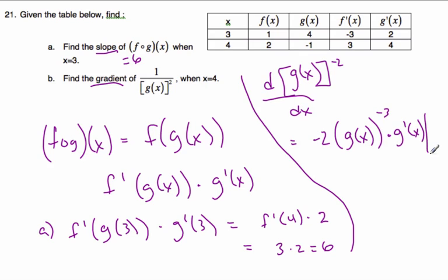And I'm going to do it when x is 4. So that gives me negative 2, g at 4 to the negative 3, g prime at 4, which gives me negative 2. g at 4 is negative 1 to the negative 3. g prime at 4 is 4.